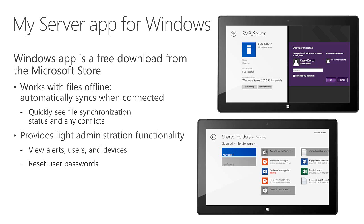The My Server app is also available for Windows Phone. You can view alerts, view users in the environment, enable or disable user accounts, reset passwords, and see devices in the environment. It's not intended to replace using the dashboard for administration, but to be able to quickly see what's happening with your server and do some basic light administration tasks on the go.